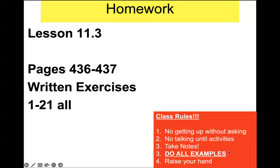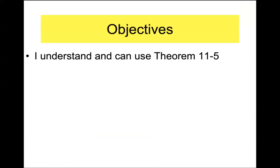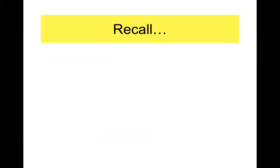All right, here we go — here is your homework for section 11.3. Only one shape today: trapezoids. We're going to prove the formula for area, I'll show you some examples, and that'll be it. Objective 11.5 is going to be the area of the trapezoid.